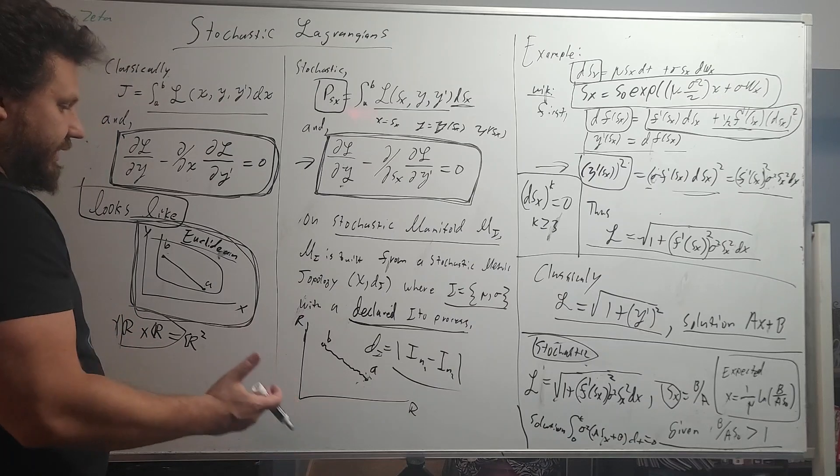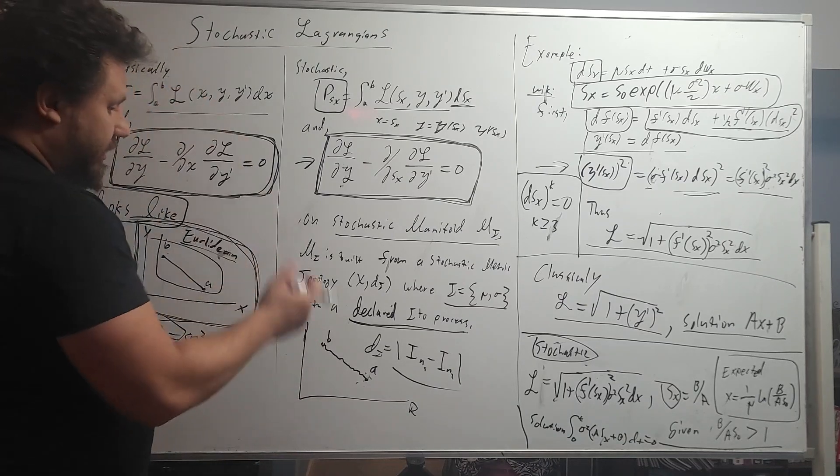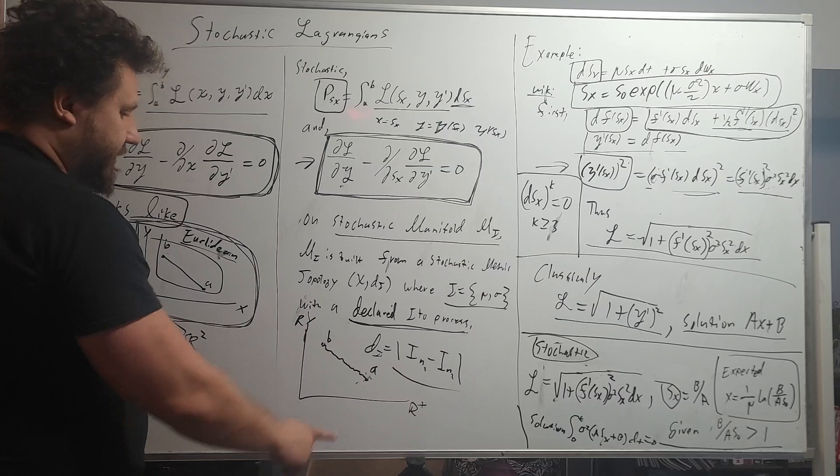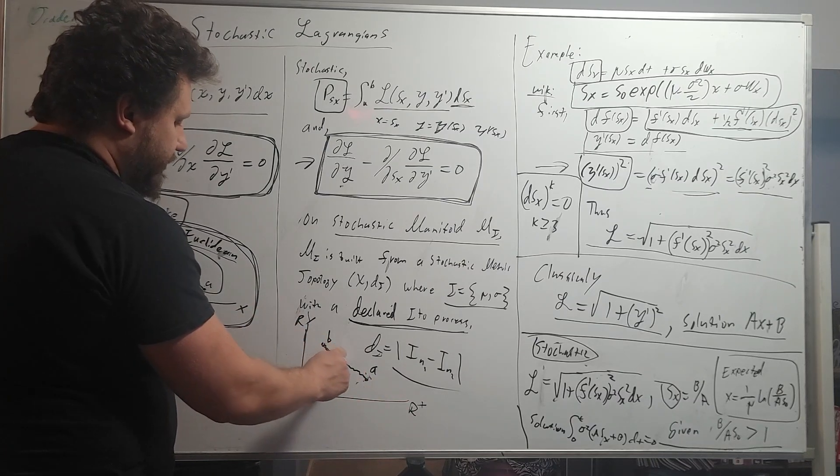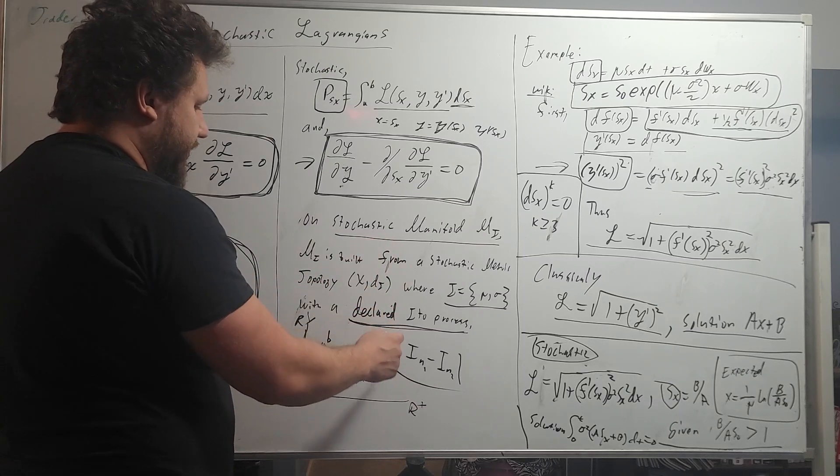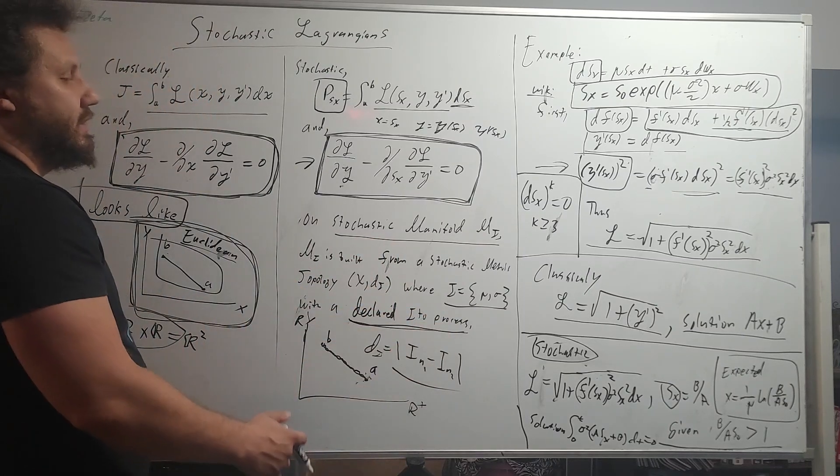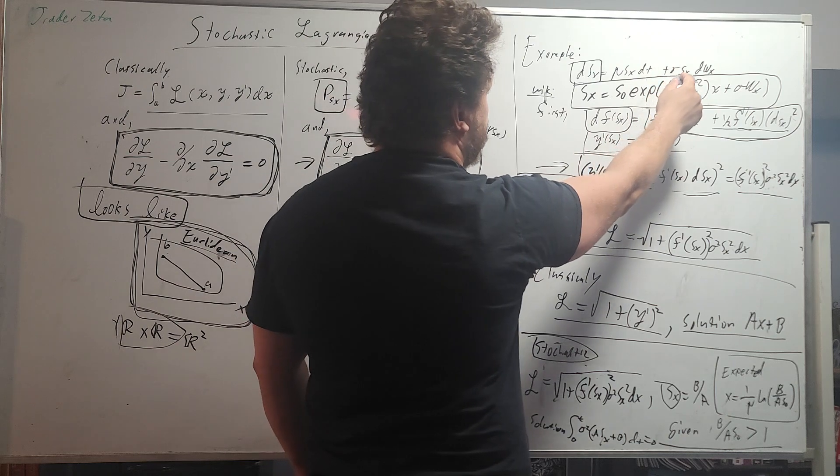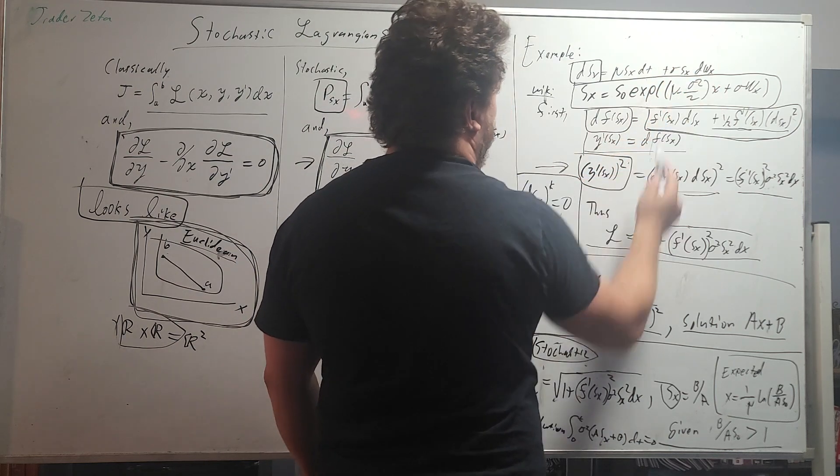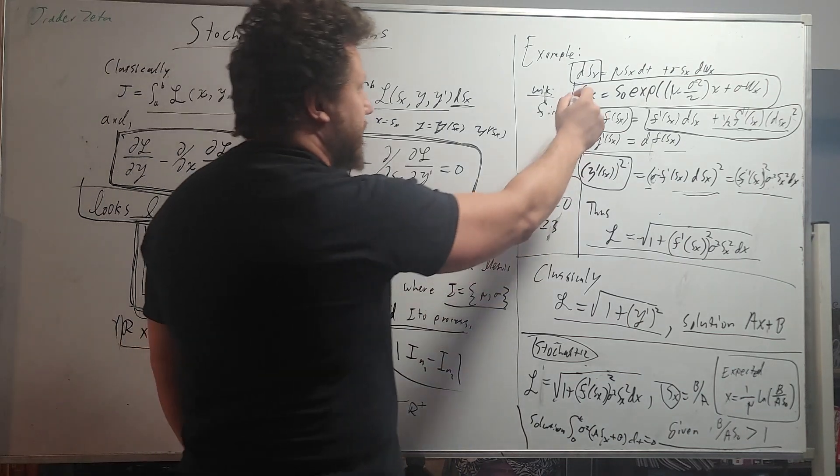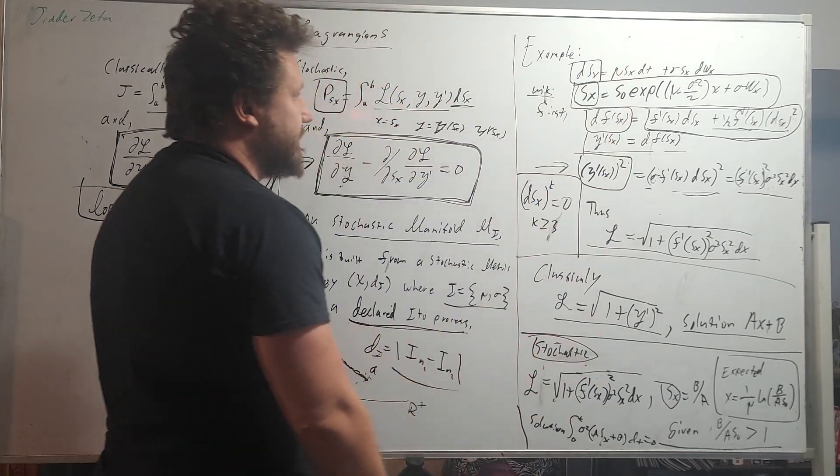So the question is, what would this stochastic Lagrangian look like? Mind you that we are in stochastic space, so we are real times real. This is maybe x and this is y on the reals, and the shortest distance between two points is this stochastic line. So in this manifold, we have to choose a general ideal process. We're going to choose this one: mu stochastic process dt plus sigma stochastic process d with respect to the Wiener process, and that is the classical geometric Brownian motion.